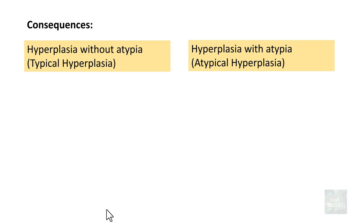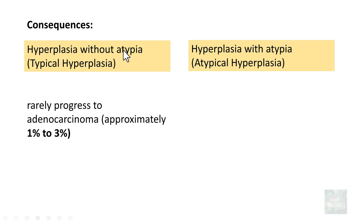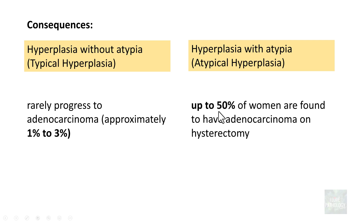The reason to categorize hyperplasia as typical or atypical is prognostic significance. Typical hyperplasia very rarely progresses to adenocarcinoma — the rate of progression is approximately 1 to 3%. In contrast, in atypical hyperplasia, up to 50% of women are found to have adenocarcinoma on hysterectomy.